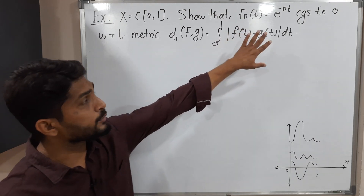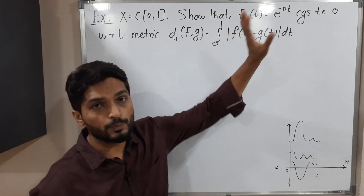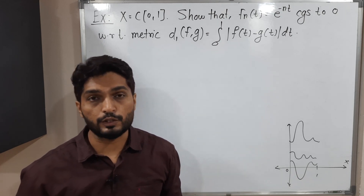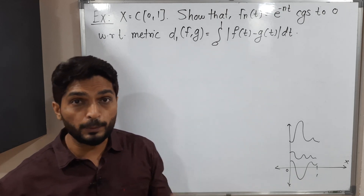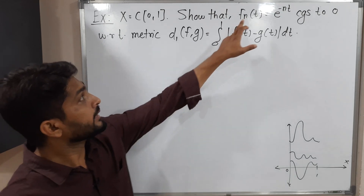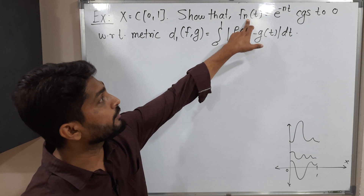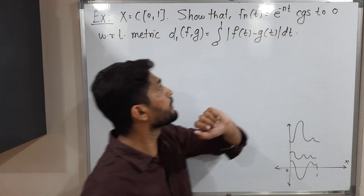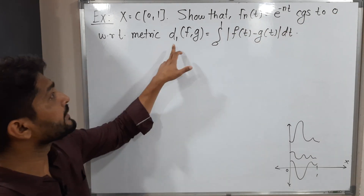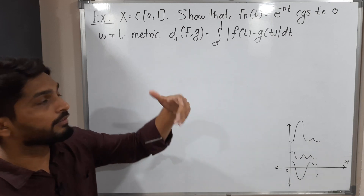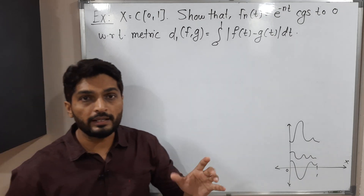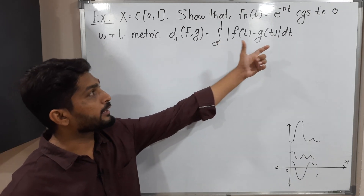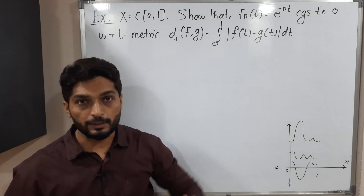fn(t) is one of them. It is defined in a specific way. It is a sequence of functions and our target is to prove that fn(t) converges to zero, with this metric. The metric is defined as the integral from 0 to 1 of |f(t) - g(t)| dt.